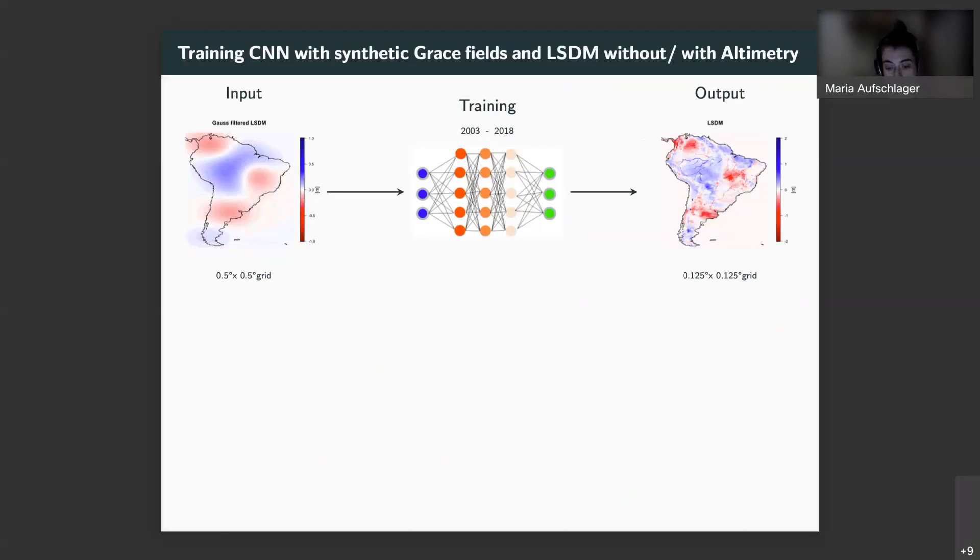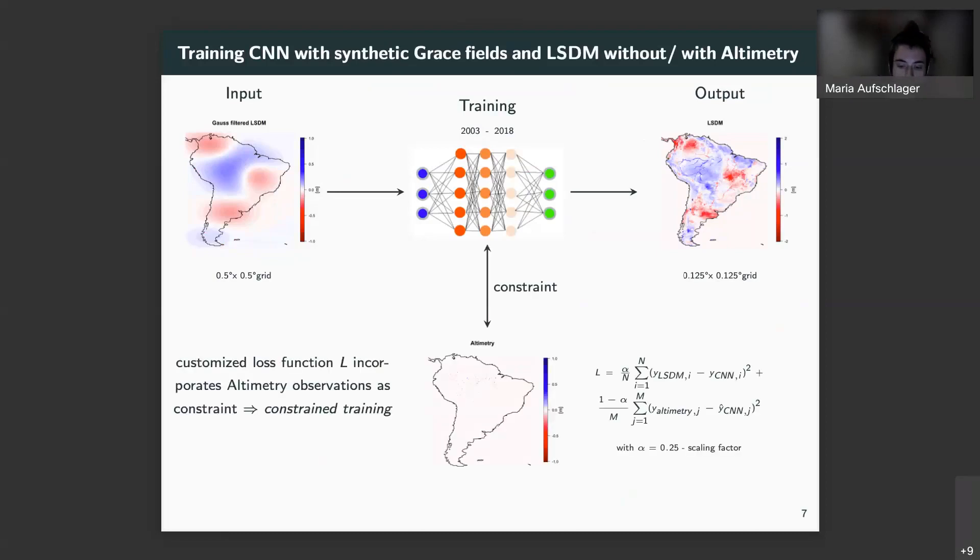With this scheme, I already have set up my first model, which so far is just based on LSDM data. So the next step is to integrate altimetry records. To realize that, a custom loss function got introduced to incorporate the altimetry observations. The loss function is constructed in a data assimilation scheme, combining two mean square error terms, as you can see in the formula, between the neural network downscaling, the LSDM target values, and the altimetry records. With this, the neural network is now constrained by altimetry observation and gets corrected towards the observations. Thereby, the CNN is now able to self-validate and adapt the training process, not just based on the model values, but on actual observations as well. To stay within the terminology of data assimilation, we call this the constraint-trained model.